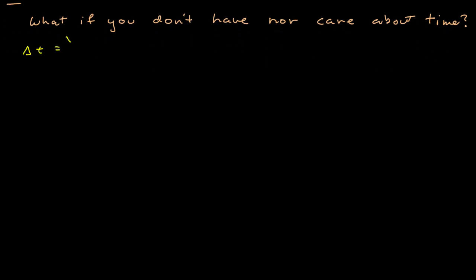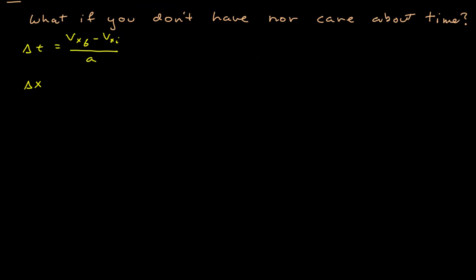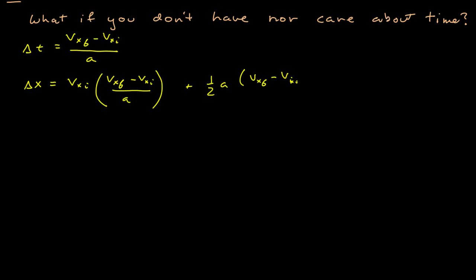Delta t then equals the final velocity minus the initial velocity, divided by the acceleration. Now I'm going to substitute that into the position equation. Delta x equals v_x initial times delta t — which is v_x final minus v_x initial divided by a — plus one-half a times delta t squared, which becomes v_x final minus v_x initial, all squared, divided by a squared. I'm going to multiply the top and bottom of that expression by two. One factor of a cancels, so the two ends up in the denominator.